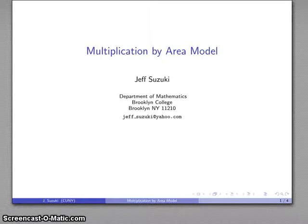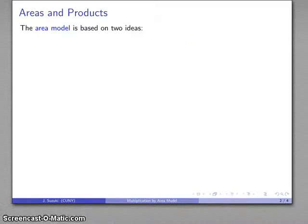Alright, let's take a look at another way we can multiply two things, and this one's actually a little bit more advanced. It's called multiplication using an area model, and this is based on two ideas which are independent of all the arithmetic that we've done thus far.